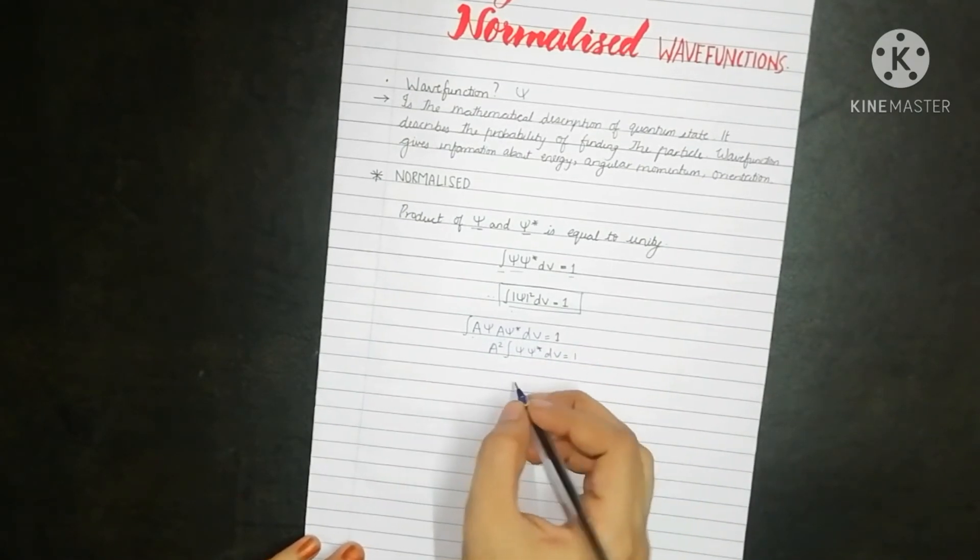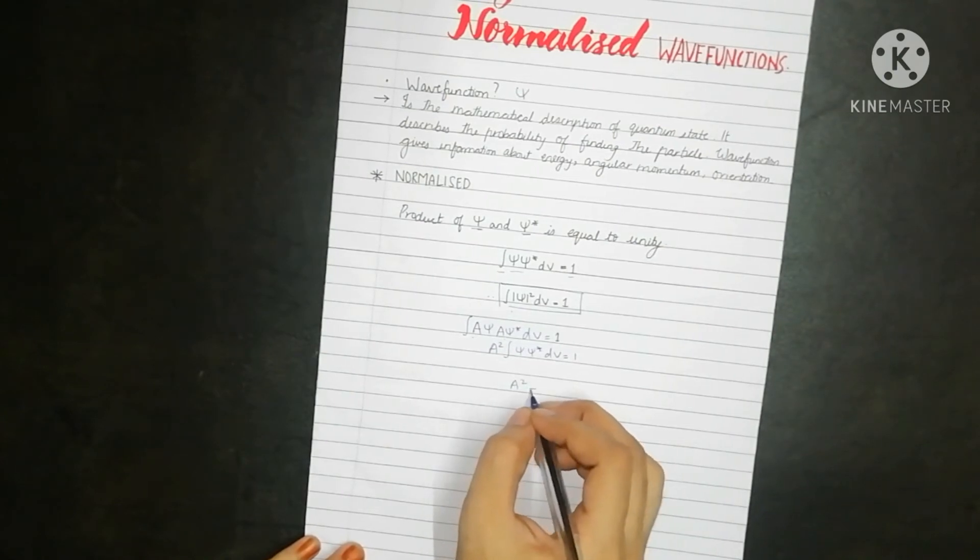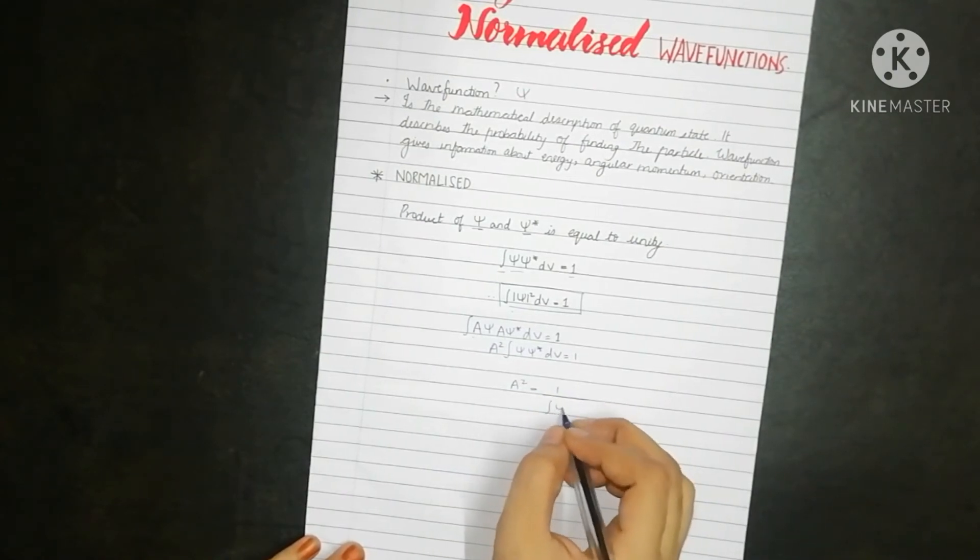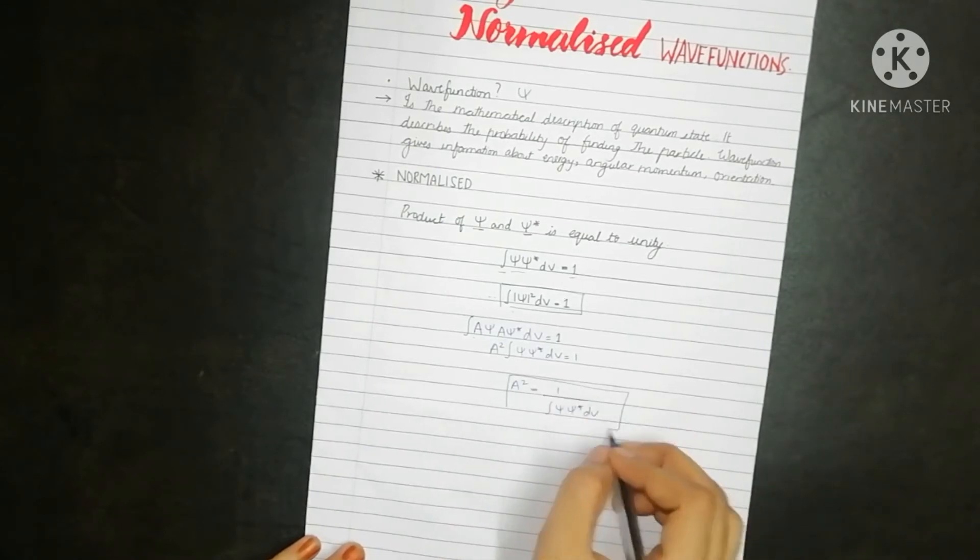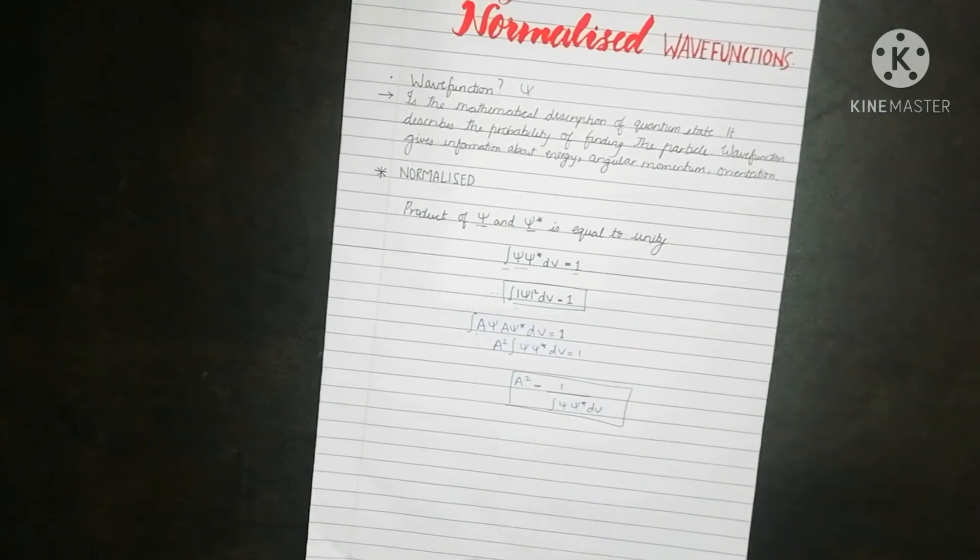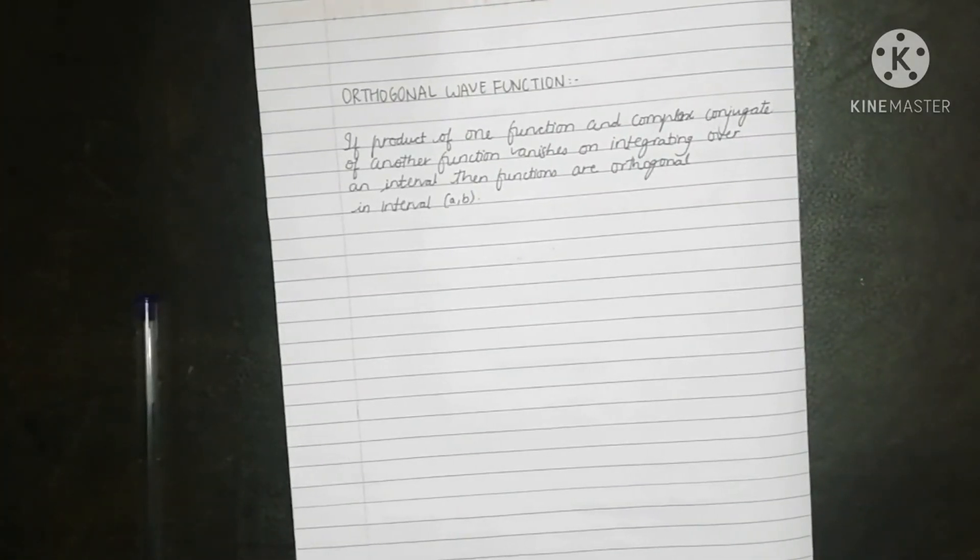Therefore, a square can be written as 1 upon integration of psi into psi star dv. So this was the case of normalized wave function. Next, we will see what is an orthogonal wave function.